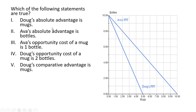Moving on, let's evaluate if these statements are true. Statement 1: Doug's absolute advantage is in mugs. We compare Doug's 5 mugs with Ava's 10 mugs — Ava has the absolute advantage in mugs since she can produce more in a given period. Statement 1 is false. Statement 2: Ava's absolute advantage is in bottles — that's also false. Neither Ava nor Doug has an absolute advantage in bottles; they can both produce 10 bottles with the same amount of time.